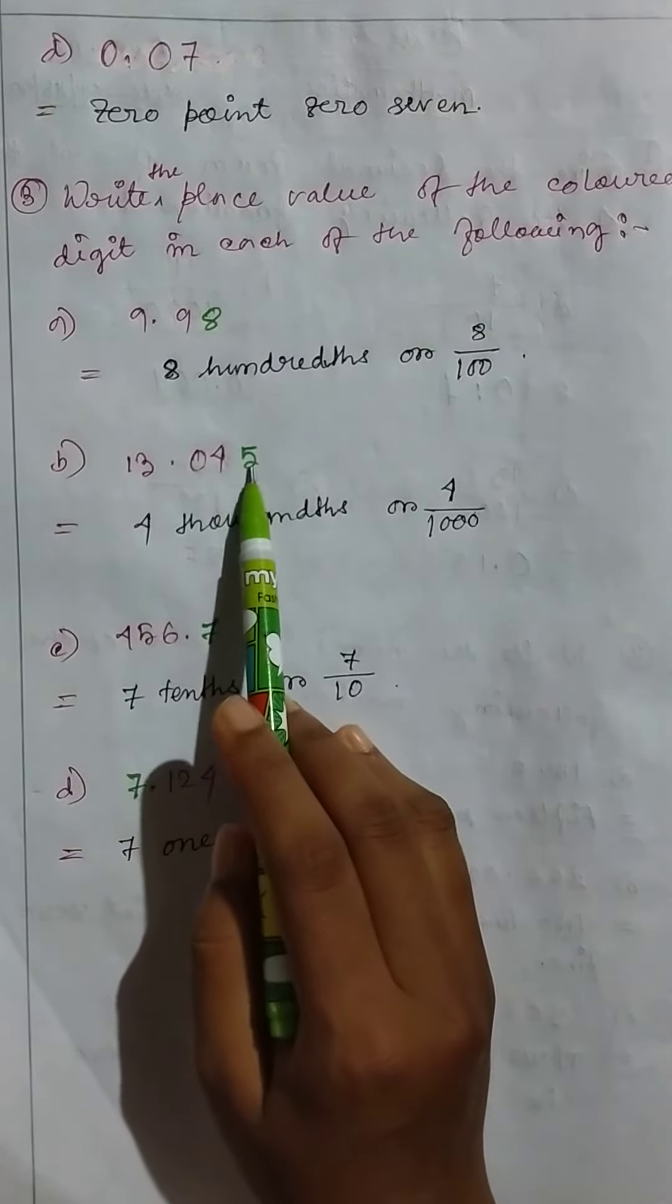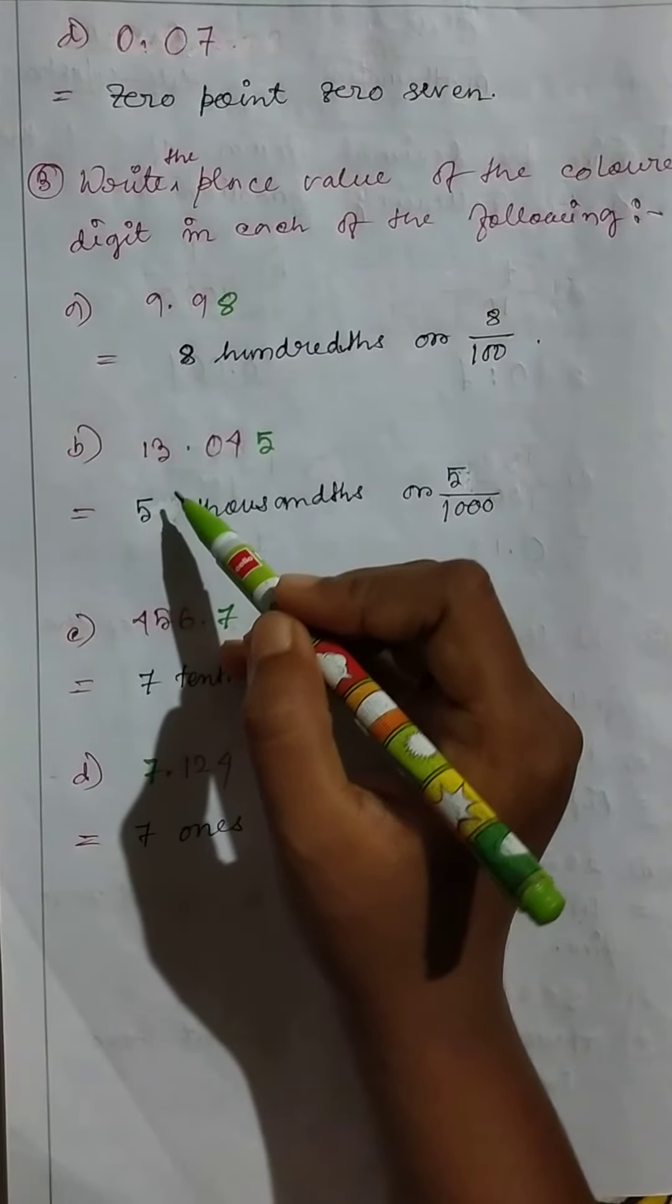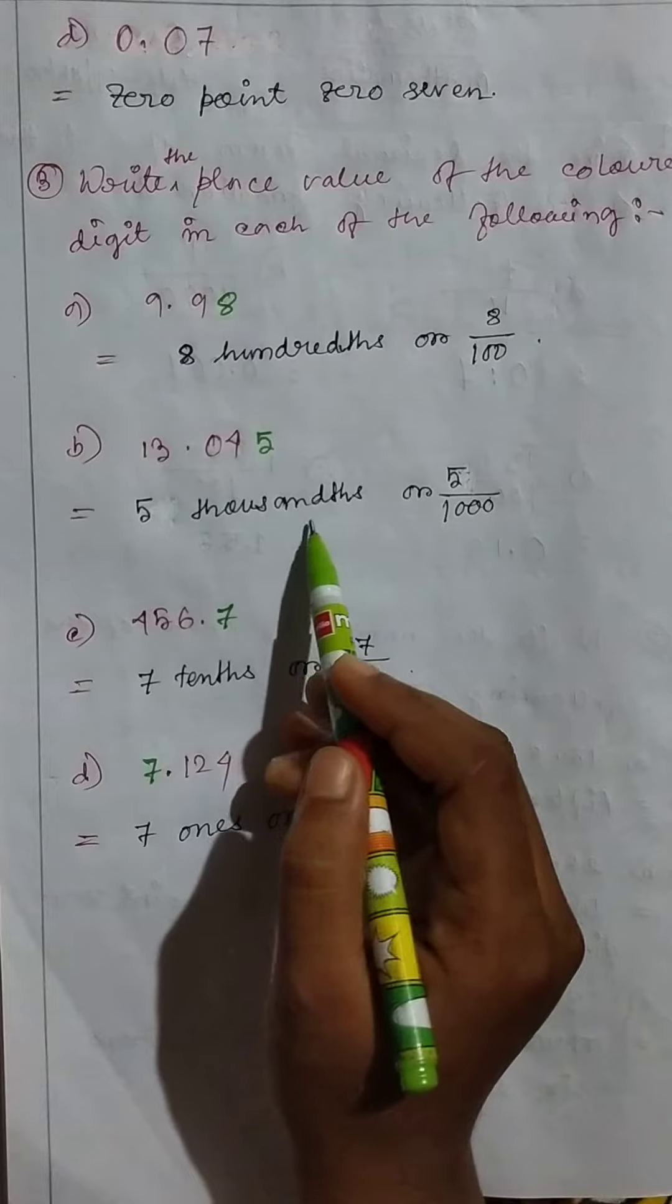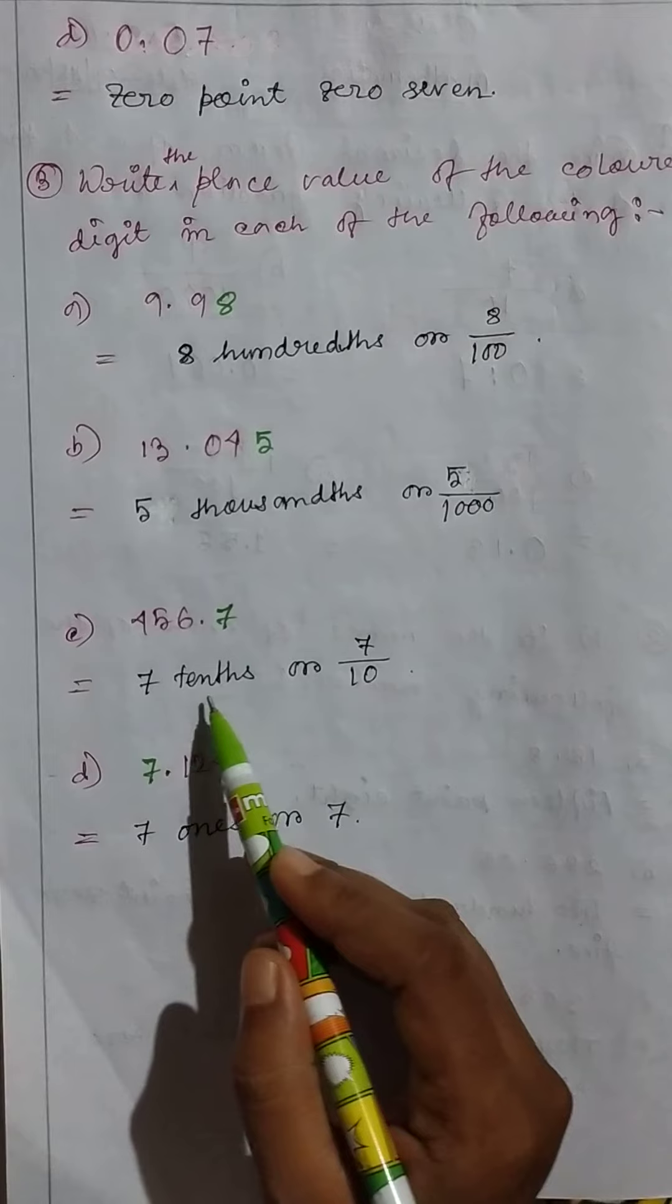Four five six point seven, so seven tenths or seven by ten.